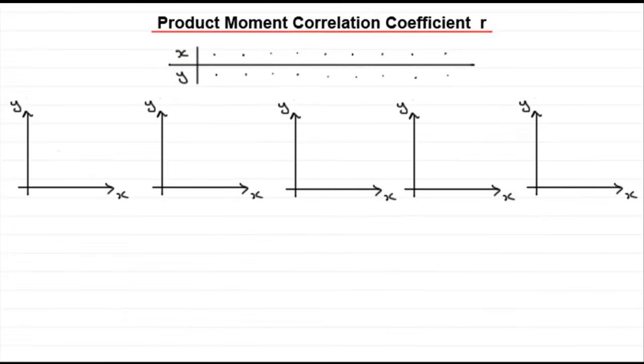Hi, welcome to this tutorial, another in my series on correlation and regression. In this tutorial we're going to look at something called the product moment correlation coefficient, and the symbol that we use for that statistic is R.